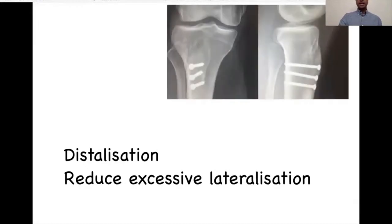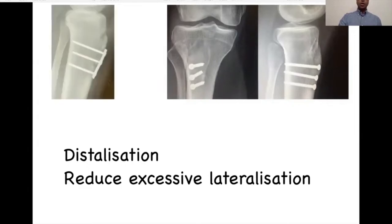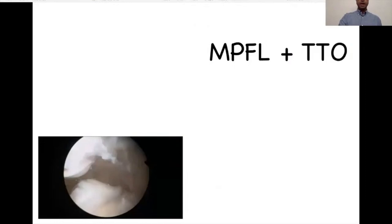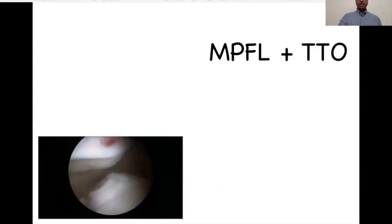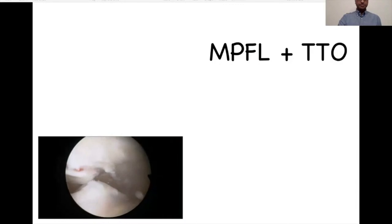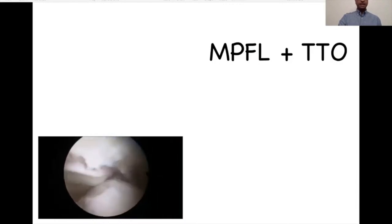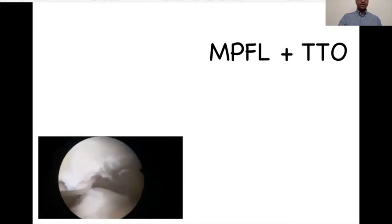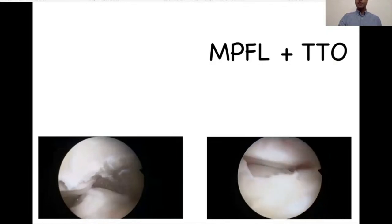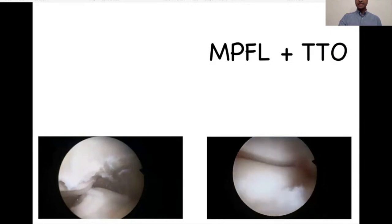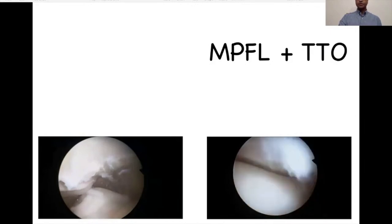Tibial tubercle osteotomy is used to correct a lateralized tubercle and patellar height. Depending on the calculation, you can distalize and medialize, and it is fixed with screws or a combination of plate and screws. When there is significant patellar instability — as in this case where the patella is dislocated laterally and not in the joint at all — you have to combine MPFL and tibial tubercle osteotomy. After such a procedure, you can get excellent patellar tracking as viewed from the supralateral arthroscopy.